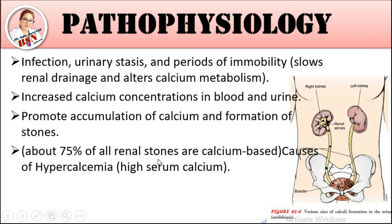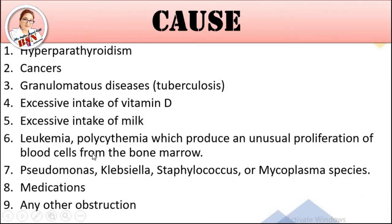About 75% of all renal stones are calcium-based. The causes include: hyperthyroidism, cancer, tuberculosis, excessive intake of vitamin D, excessive intake of milk — milk ke andar high calcium hota hai, jis ki wajah se vitamin D yeh cause kar rahe hote hain stone formation ki.